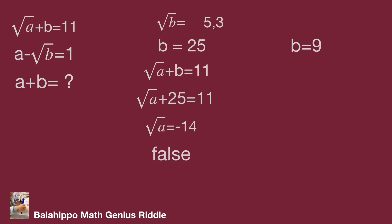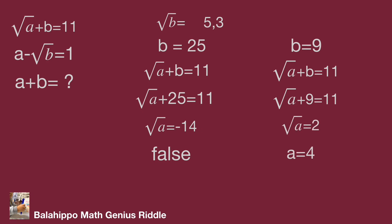With b = 9, we get √a + 9 = 11, so √a = 2 and a = 4. Therefore a + b = 13. That's the answer! Did you figure it out? Thank you for watching the video. Bye-bye!